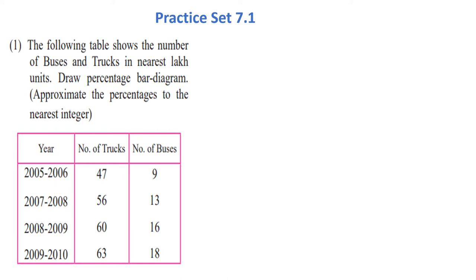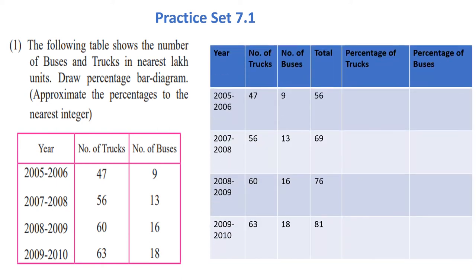First we have to find out the percentage of each vehicle — either truck or bus. To find the percentage, we first calculate the total number of vehicles in each particular year. We will make a table with year, number of trucks, number of buses, total, percentage of trucks, and percentage of buses. In 2005-06, trucks were 47 and buses were 9, so the total number of vehicles becomes 56. In 2007-08, trucks were 56 and buses were 13, so total becomes 69. In 2008-09, trucks were 60 and buses were 16, so total becomes 76. In 2009-10, trucks were 63 and buses were 18 and total became 81.